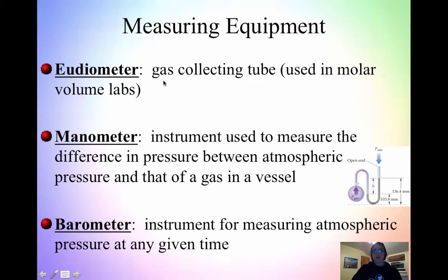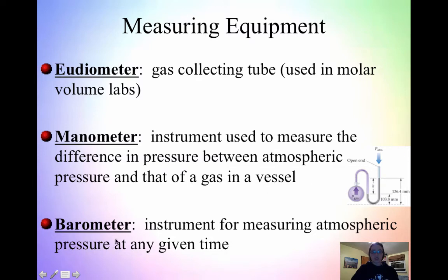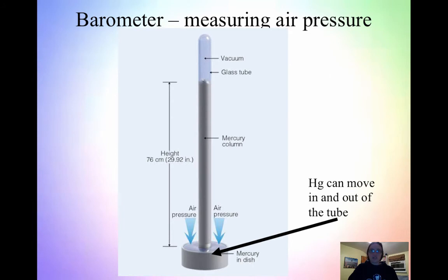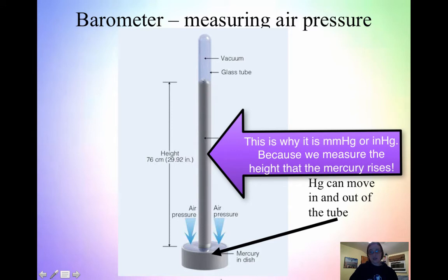When measuring gases, there are a few different pieces of equipment we can use. The first is a eudiometer, which is the same thing as a gas collecting tube — used in the molar volume labs, it almost looks like a burette or a very long thin test tube. A manometer measures the difference between atmospheric pressure and the pressure inside a vessel. A barometer measures atmospheric pressure; mercury barometers are the most precise but difficult to find. The air pressure pushes down on the mercury in the tube, and based on the air pressure you measure the height of the mercury, which tells you atmospheric pressure.